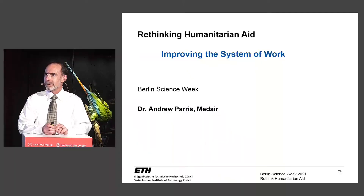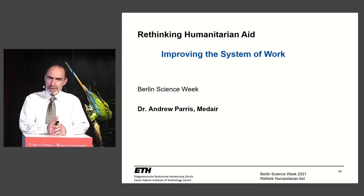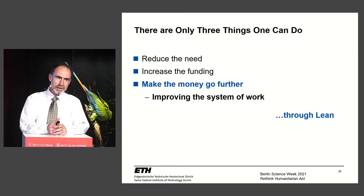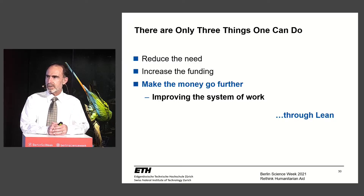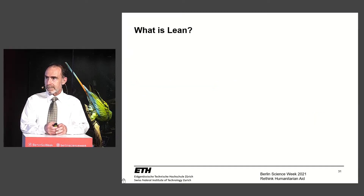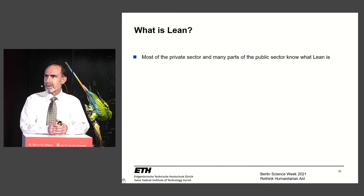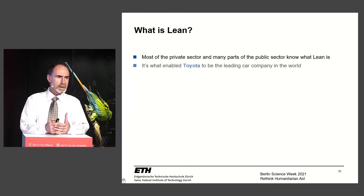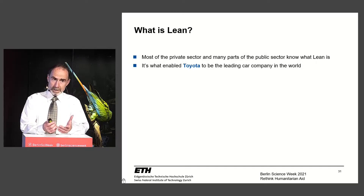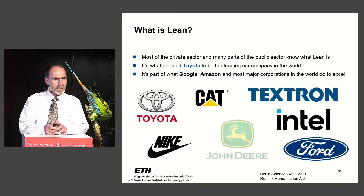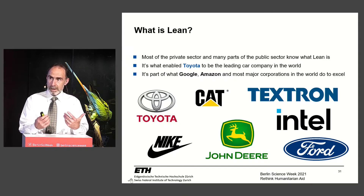My name is Andrew Paris, Process Excellence Manager at MEDAIR, a humanitarian NGO based near Lausanne in Switzerland. I want to talk about improving the system of work through something called lean. Most of the private sector is familiar with lean — it's what enabled Toyota to become the leading car company in the world, and what Google, Amazon, and others have used to grow their market share and empower their people.